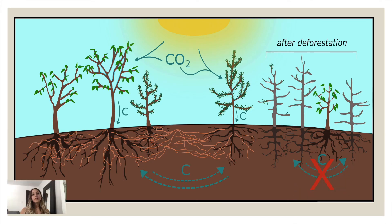Here on the left, you can see a natural relationship among the trees — they absorb the carbon dioxide and it travels down their trunks as carbon and gets distributed throughout their roots. On the right, after deforestation, there is insufficient carbon for surrounding trees to keep thriving.